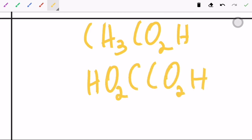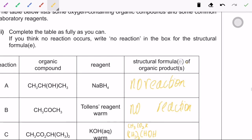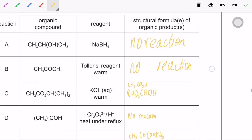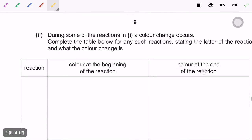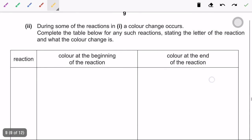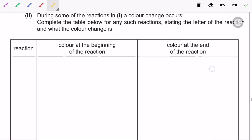Here again, two products, so you must remember to put in both, because they said organic products, the structural formulae of organic products, which means that there may be one or more products or there may be no products at all. During some of the reactions, a color change occurs.